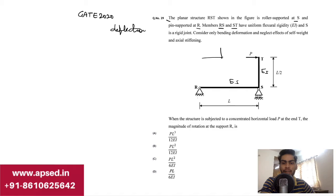Consider only bending deformation and neglect effects of self-weight and axial stiffening. So we have to only consider the bending deformation here, and the effect of self-weight and axial stiffening are neglected.